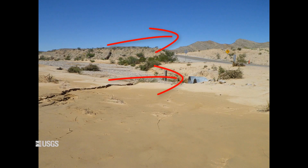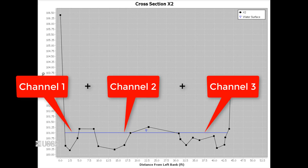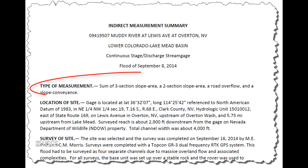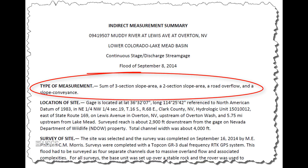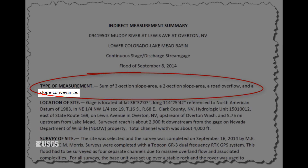A multiple component indirect measurement could go two ways. The first is simpler from a computational standpoint, and it just involves adding up separate indirect measurements on multiple channels. For example, one I did several years ago was the combined sum of one road overflow indirect measurement performed at a low water crossing, two slope area computations on a main channel and a side channel, and a slope conveyance on another side channel.